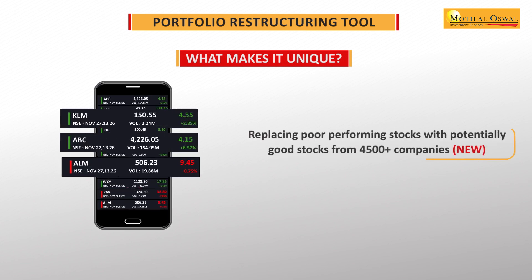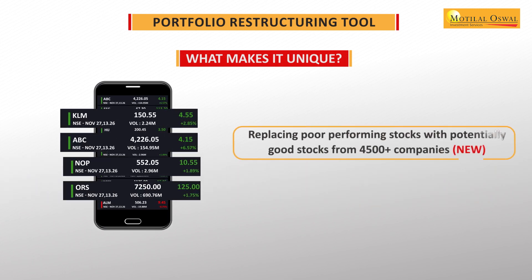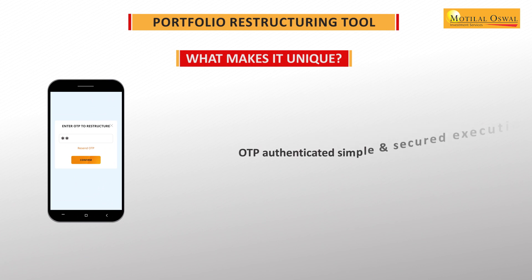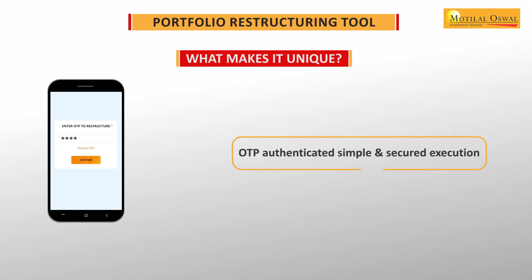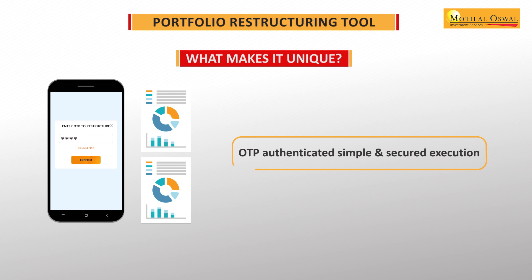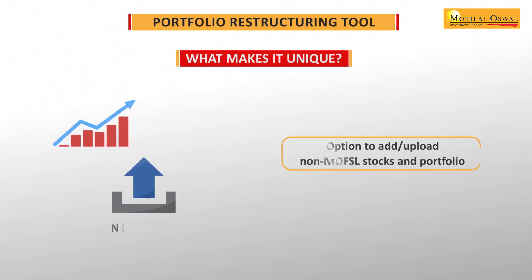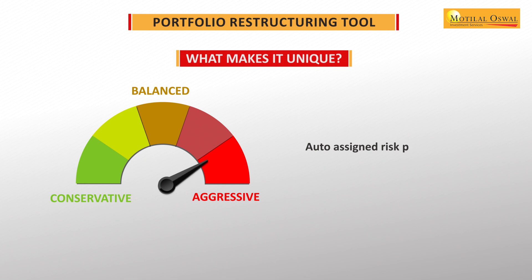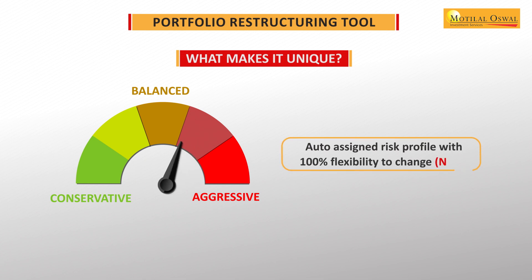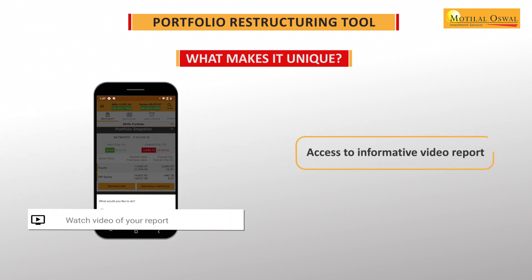Replacing poor performing stocks with potentially good stocks from over 4,500 companies. OTP-authenticated simple and secured execution of a recommended portfolio. Option to add or upload non-MOFSL stocks and portfolio for overall restructuring. Auto-assigned risk profile with 100% flexibility to change as per your preference. Access to an informative video report of the portfolio.